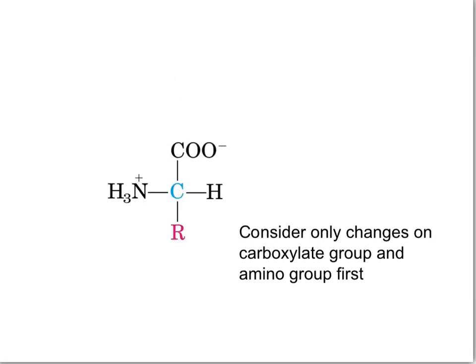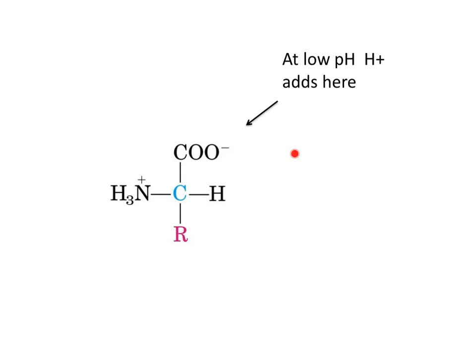In acidic conditions, the carboxylate group will accept a proton. In basic conditions, the amino group will lose a proton to a base. If a strong solution of hydrochloric acid is added to a solution of alanine, valine, or serine, lowering the pH, this carboxylic acid group will accept a proton.